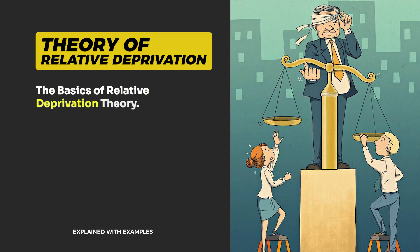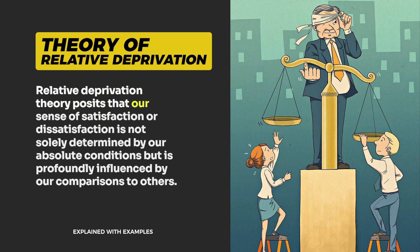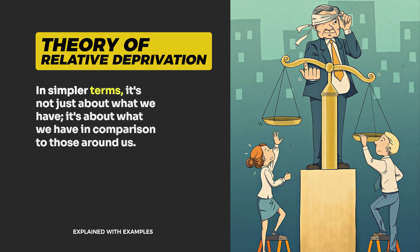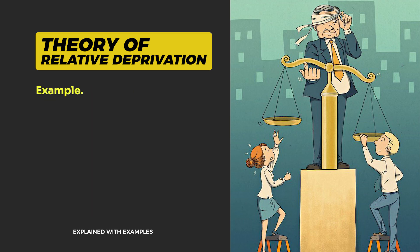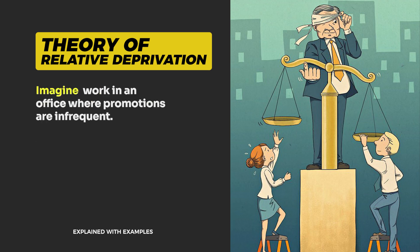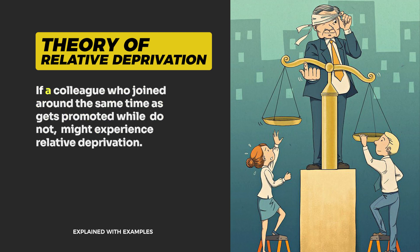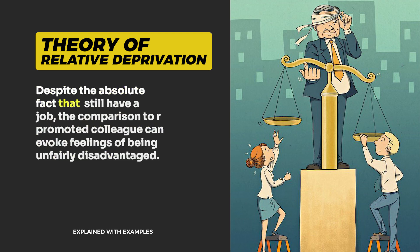The basics of relative deprivation theory. Relative deprivation theory posits that our sense of satisfaction or dissatisfaction is not solely determined by our absolute conditions but is profoundly influenced by our comparisons to others. In simpler terms, it's not just about what we have — it's about what we have in comparison to those around us. For example, in workplace promotions: imagine working in an office where promotions are infrequent. If a colleague who joined around the same time gets promoted while you do not, you might experience relative deprivation. Despite the absolute fact that you still have a job, the comparison to your promoted colleague can evoke feelings of being unfairly disadvantaged.